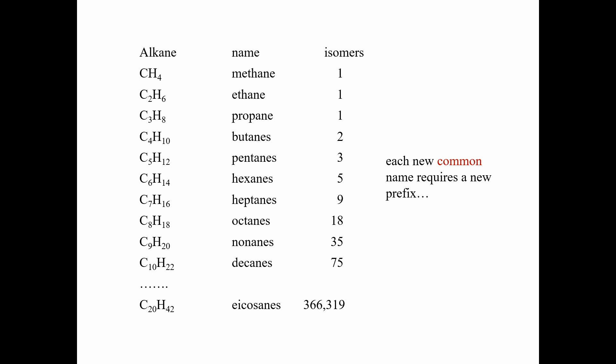These are the homologous series of alkanes. Methane, ethane, and propane each have only one isomer, which is their normal straight chain. But starting from butane, isomers begin — butane has 2, pentane has 3, hexane has 5, and others as shown.